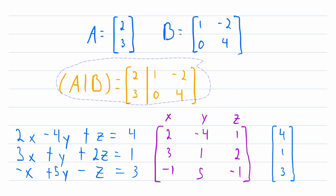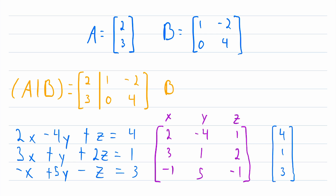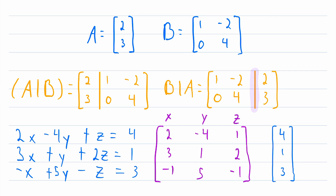Also, quickly before we go — we could also look at this augmented matrix in a slightly different order. We could have B first and augment that with A. In this matrix, we would have the columns of B first: one, zero, negative two, four. And then the columns of A: two, three. Remember that a vertical line is often used to show where one matrix ends and the other one begins, but it's not actually required — this is still an augmented matrix, it just doesn't obviously look like one without the bar.